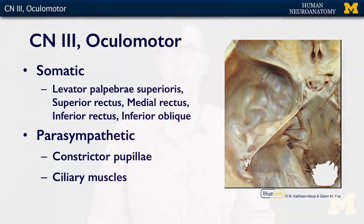Cranial nerve 3, or the oculomotor nerve, innervates most of the extraocular muscles. This includes the levator palpebrae superioris, the superior rectus, the medial rectus, the inferior rectus, and the inferior oblique.